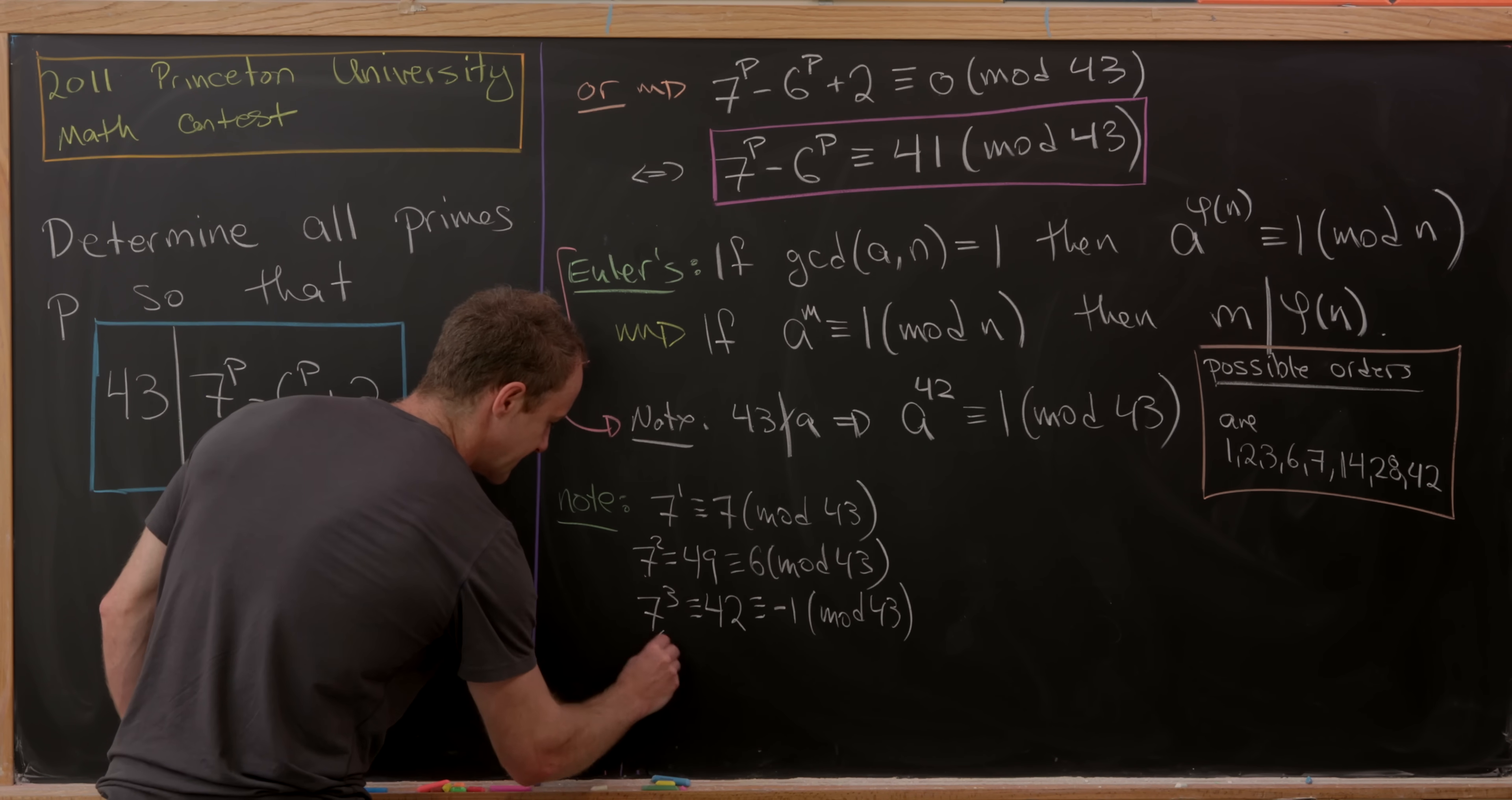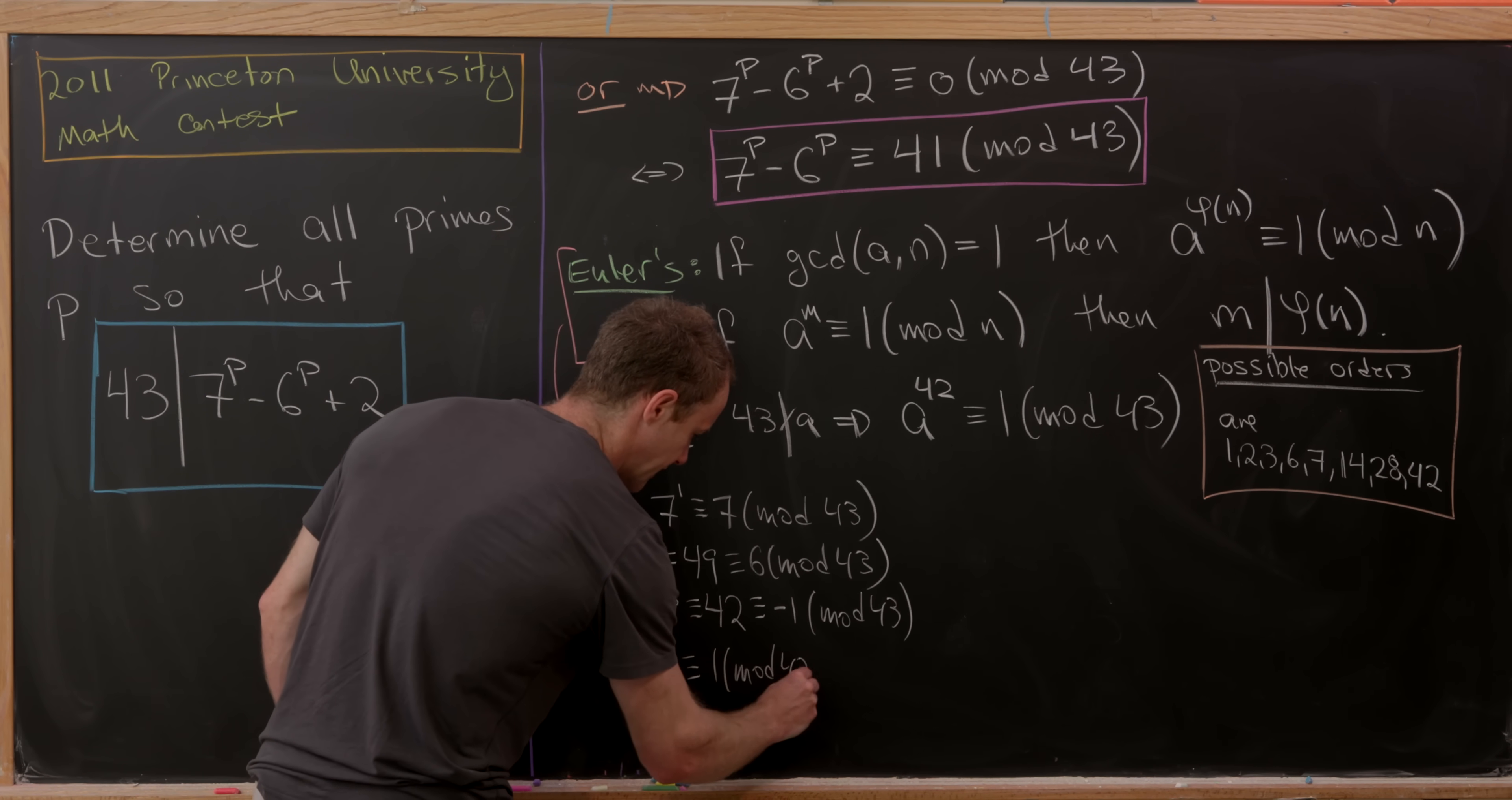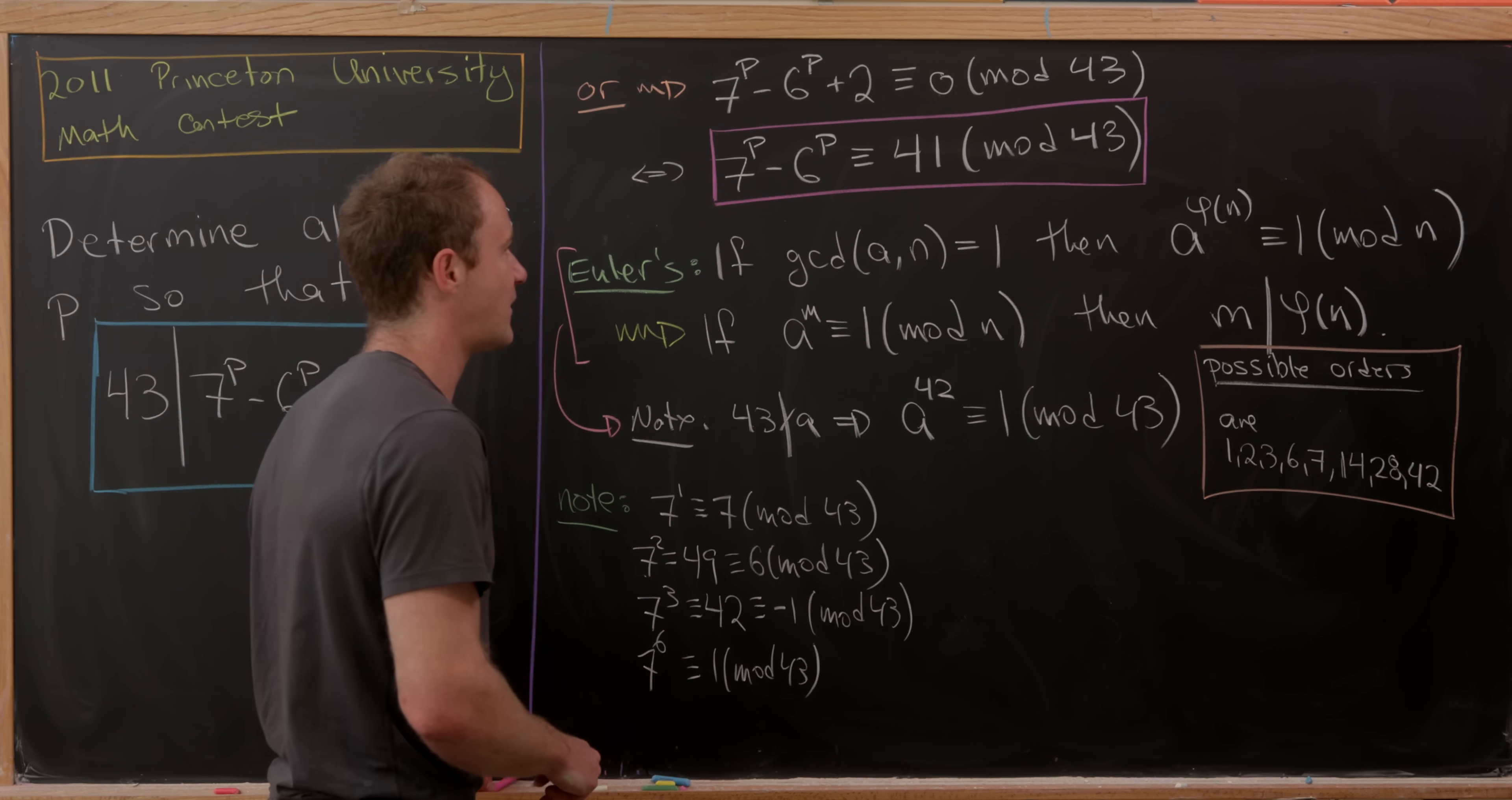That means if we take 7^6, that's the same thing as (7^3)^2. That'll give us (-1)^2, which is 1 modulo 43. In other words, the order of 7 mod 43 is 6. With that, we can build the following chart, which will be super helpful towards our goal.